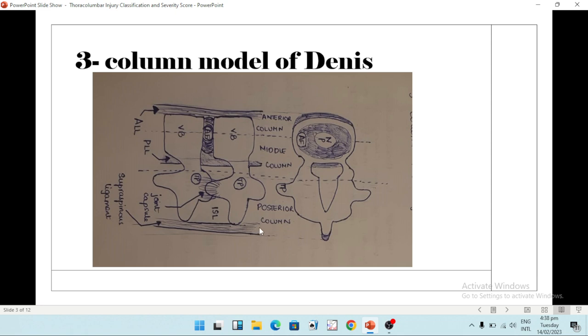So what is this posterior ligamentous complex? It consists of the interspinous ligament, the supraspinous ligament, the facet joints and its capsule, and along with it the ligamentum flavum. We'll discuss it later as well.